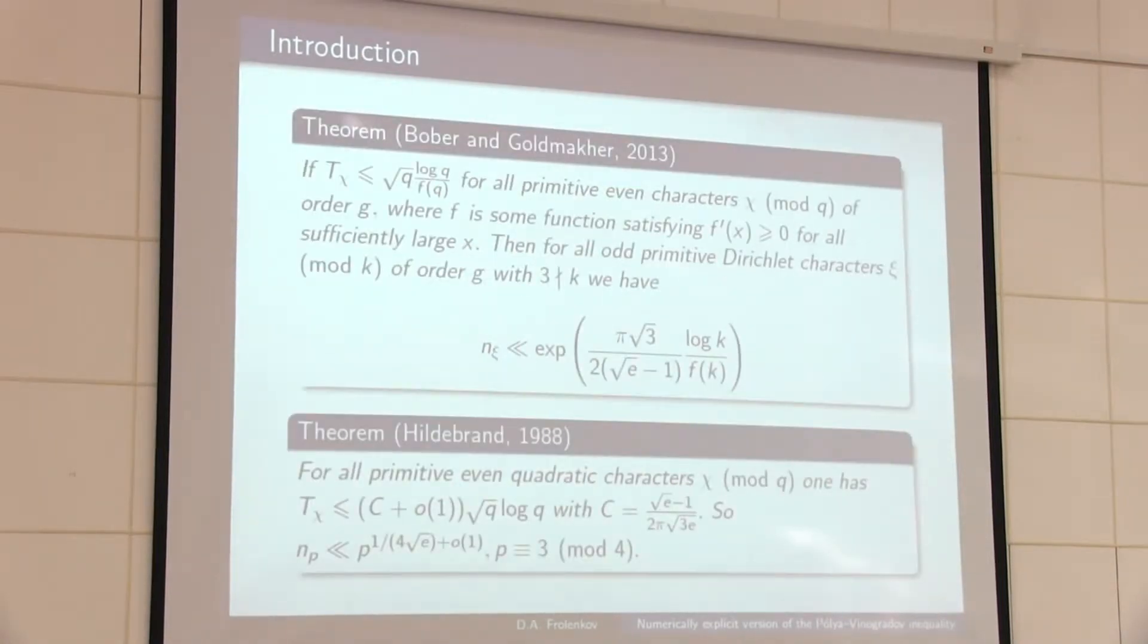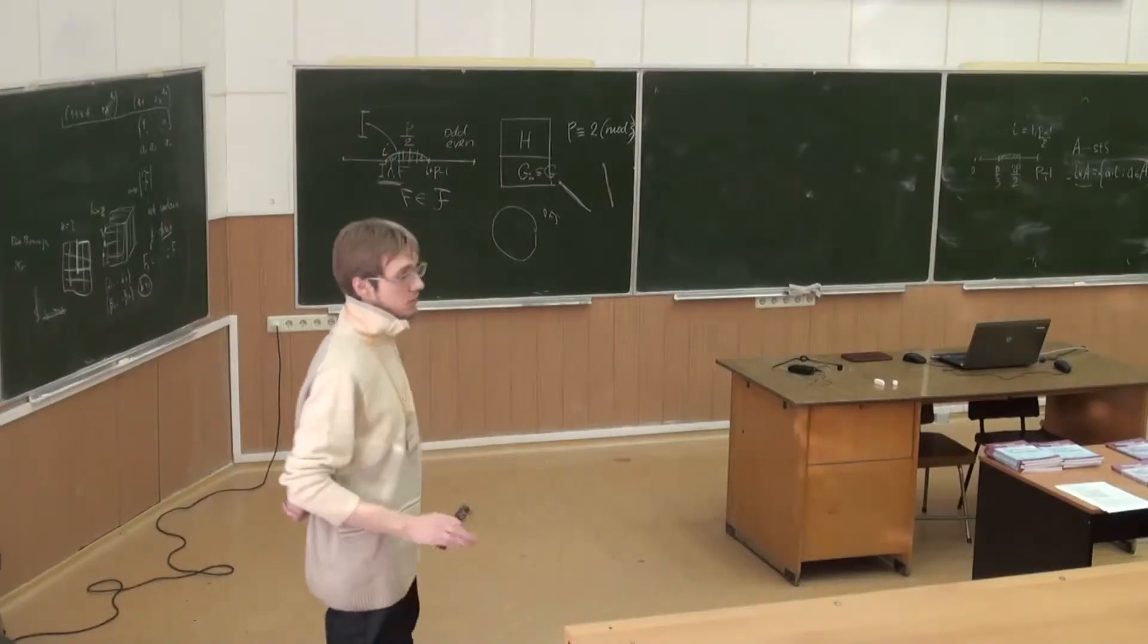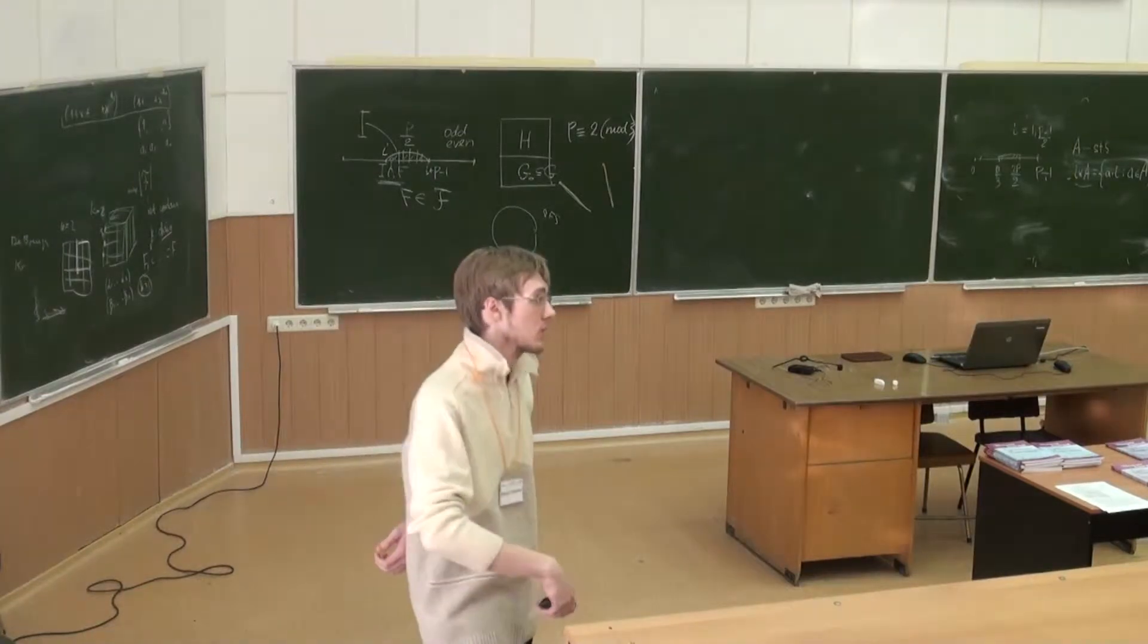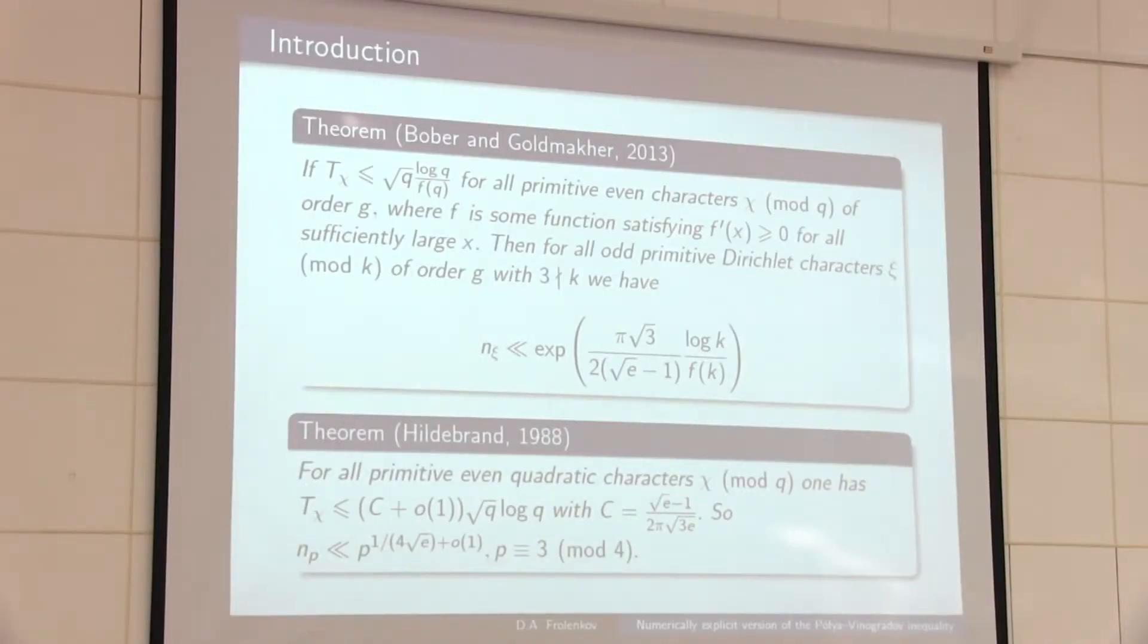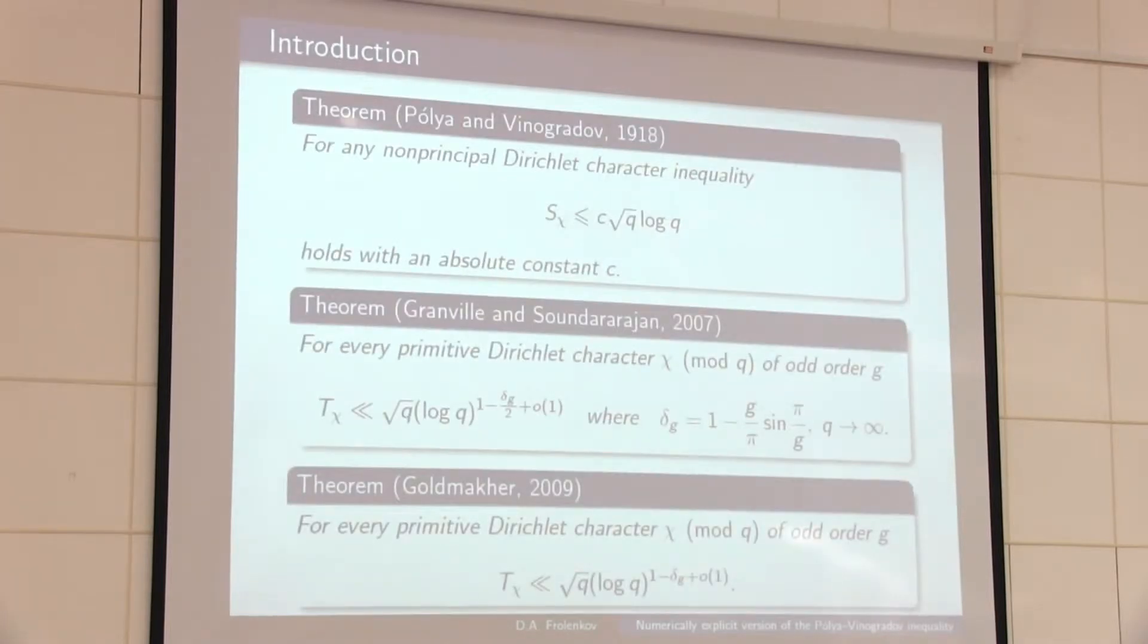Of course, character sums have a lot of applications. But today, I would like to say about a very natural application of estimating long character sums, because it's well known that character sums are connected with the distribution of primes. But quite recently, Professor Bober and Goldmacher proved a new version of this connection.